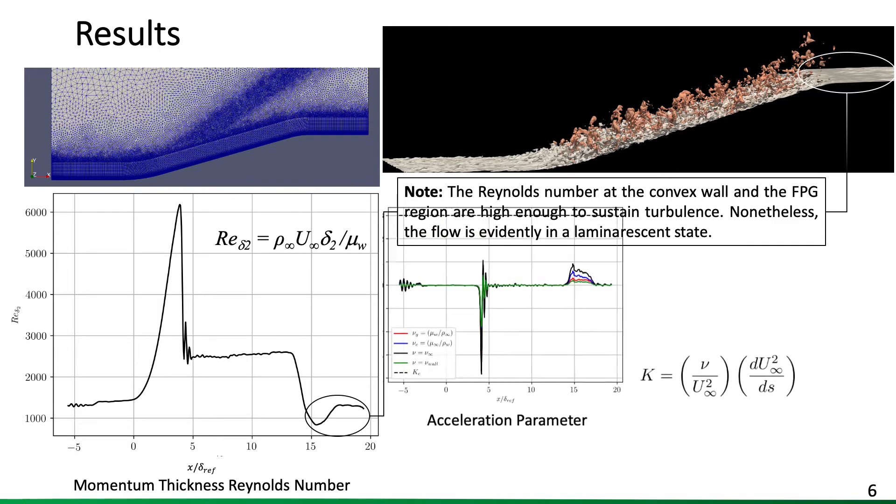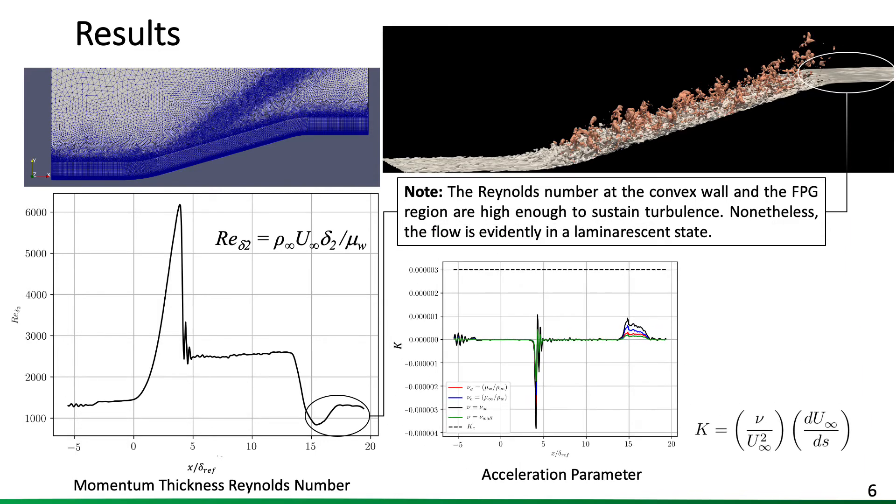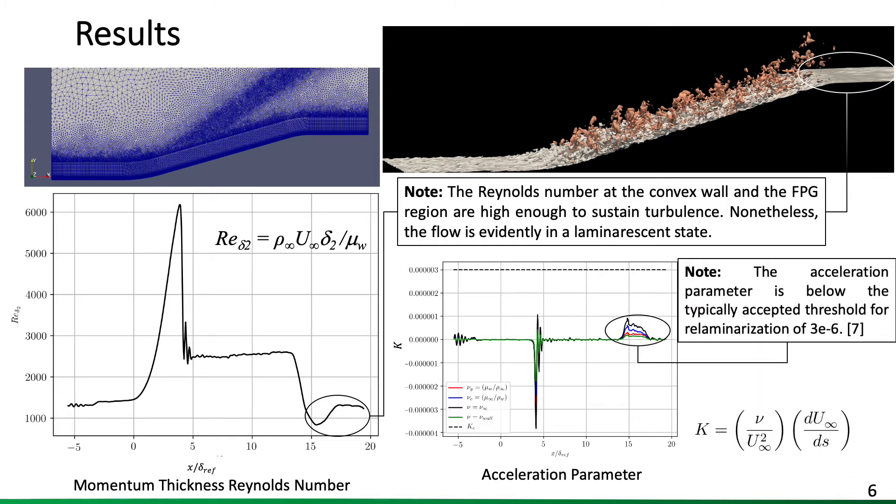Nonetheless, this is all with an acceleration parameter below the widely accepted threshold of 3 times 10 to the minus 6 for a relaminarization process to occur.